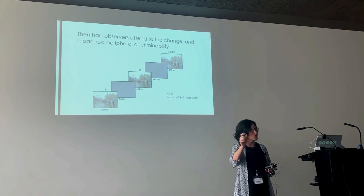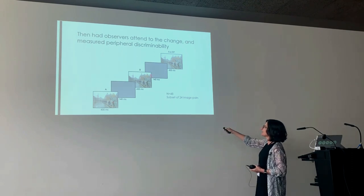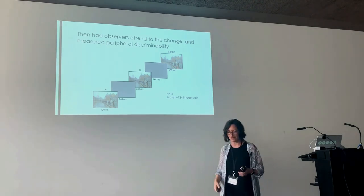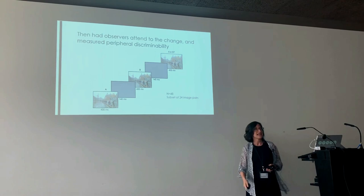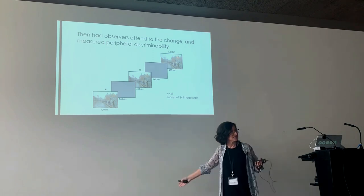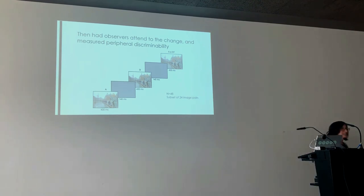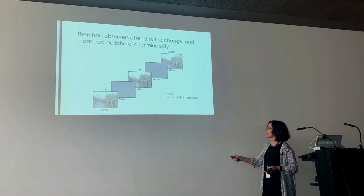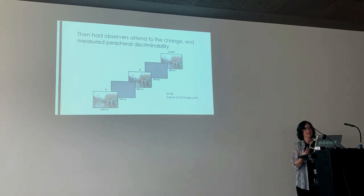If attention were all you needed to detect the change, people should be super good at this task because they know what and where the change is. But if it's peripheral vision, then performance would depend on eccentricity, and how hard the change detection is would depend on peripheral discriminability. The data shows: on the y-axis is how well they do at that peripheral discrimination knowing what the change is, as a function of eccentricity. The different lines are for different difficulty in the original flicker paradigm.